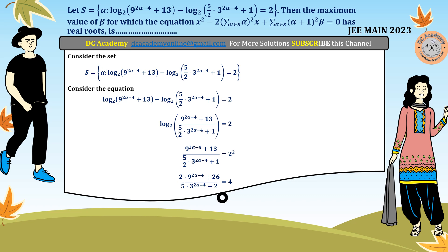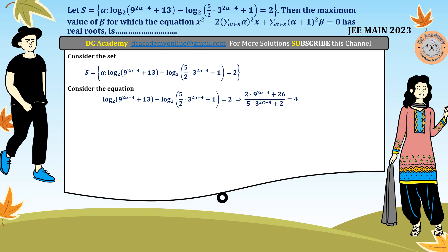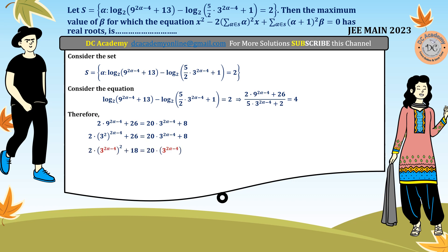We multiply both sides by the denominator, that is 5 times 3 to the power (2α minus 4) plus 2. After cross multiplication we get an equation involving 9 to the power (2α minus 4) and 3 to the power (2α minus 4). To solve for alpha it's better to rewrite everything in terms of powers of 3. We replace 9 by 3 squared, so 9 to the power (2α minus 4) becomes 3 to the power (2(2α minus 4)), giving us 3 to the power (2α minus 4) whole squared equals 26 plus 18 plus 23α times 3 to the power (2α minus 4).